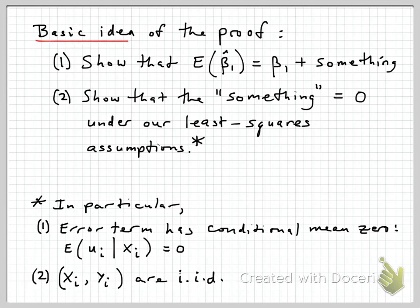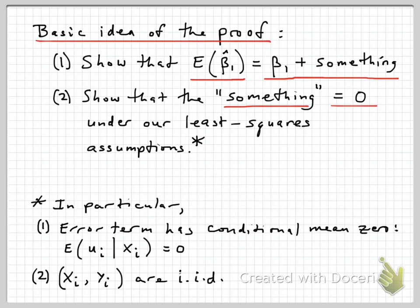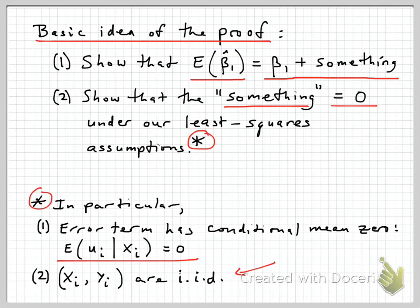The proof is a little complicated, but here's the basic idea. First, we're going to show that the expected value of beta 1 hat across many different samples is equal to beta 1 plus something. Then the second step is to show that that something is equal to zero under our least squares assumptions. The key assumptions are that the error term has conditional mean zero, and that the values of x and y for members of the sample are all identically and independently distributed draws from the underlying population — essentially a pure random sampling assumption.